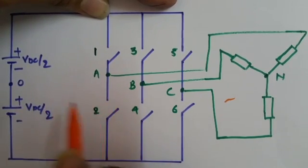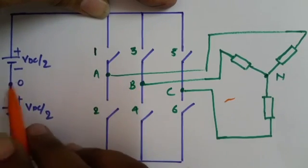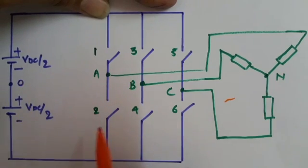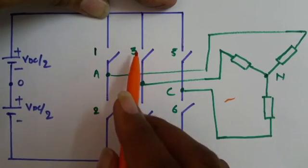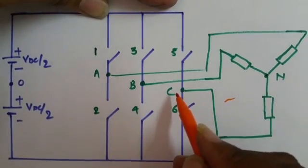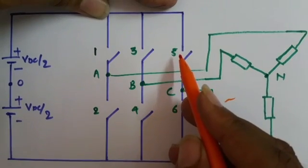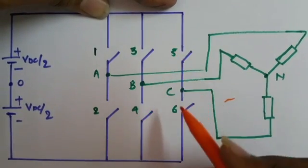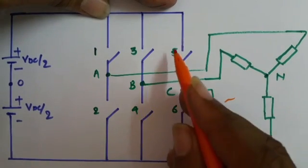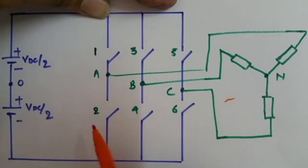Similarly, we can have plus VDC/2 output between V_BO if switch 3 is on and switch 4 is off. And between V_BO, if switch 4 is on and switch 3 is off, then the output will be minus VDC/2. Between V_CO, output will be plus VDC/2 in case switch 5 is on and switch 6 is off. And if switch 6 is on and switch 5 is off, then output of V_CO will be minus VDC/2.